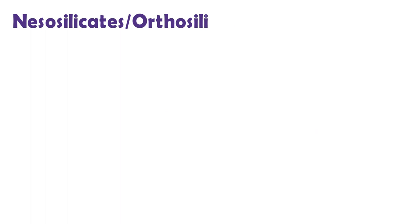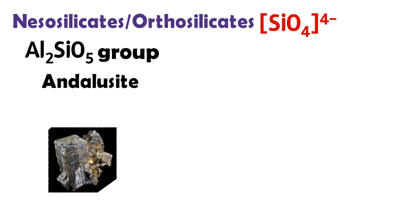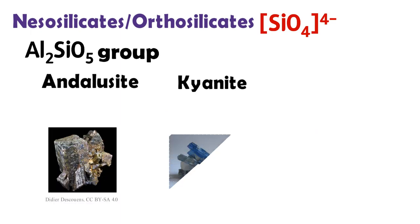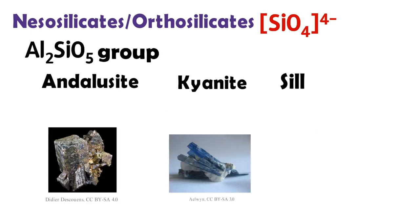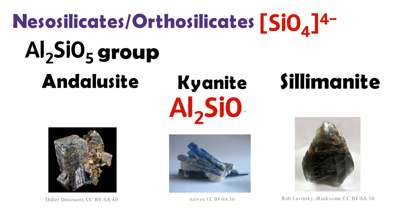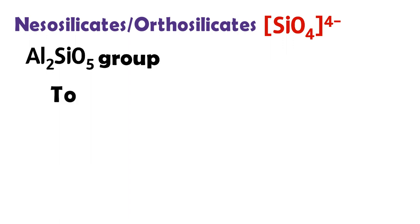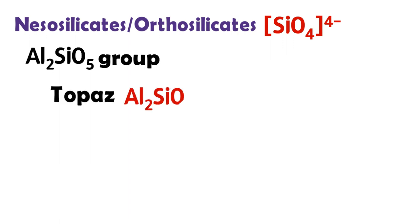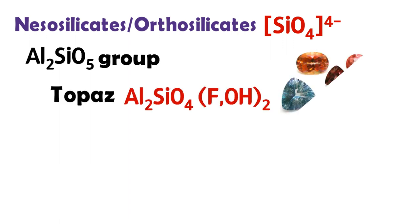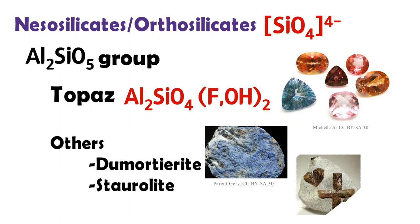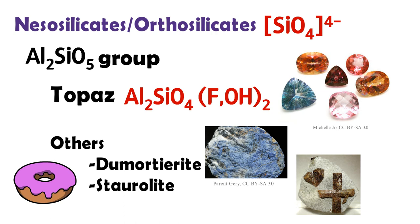As the Al₂SiO₅ group, the orthosilicates andalusite, kyanite, and sillimanite have the general formula Al₂SiO₅. Topaz is a silicate gemstone of aluminum and fluorine. The pink and red varieties come from chromium replacing aluminum.